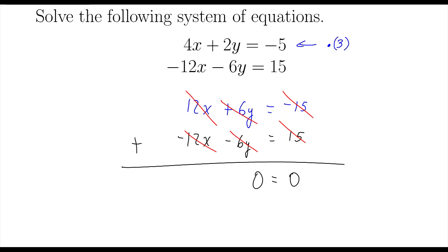So, if you get 0 equals 0 or 1 equals 1, anything that's true, you wouldn't say that there's no solution. You would say there's an infinite number of solutions.